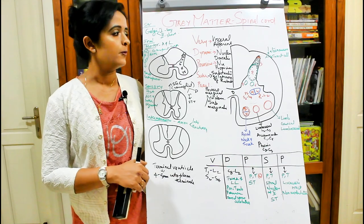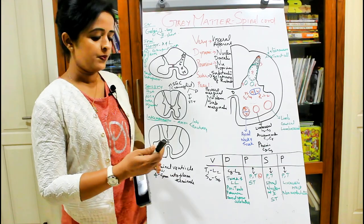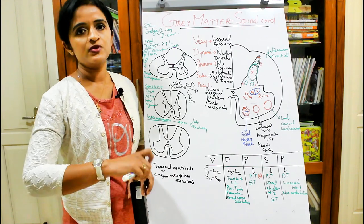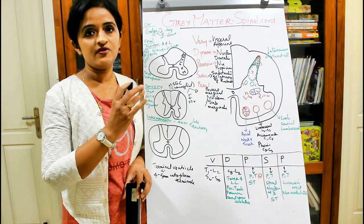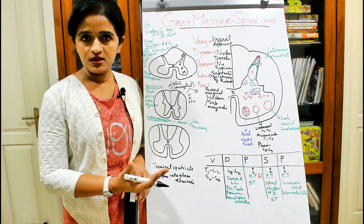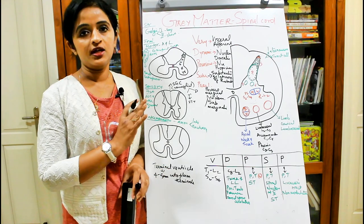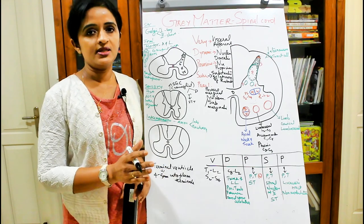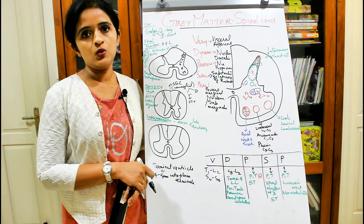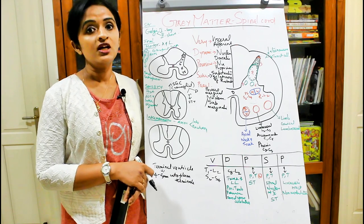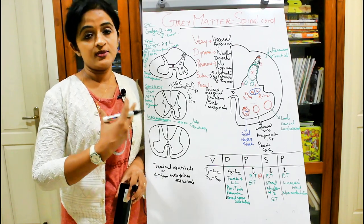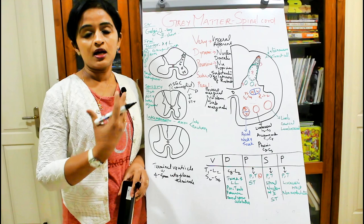In this session I'll be first focusing on the gray matter. In the next session I'll be talking about the Rexed laminar architecture, and then we will move on to the white matter, so that you will know how the white matter comes from different parts of the spinal cord.